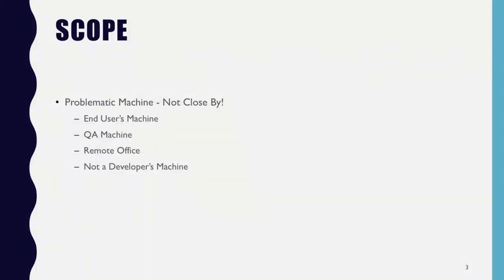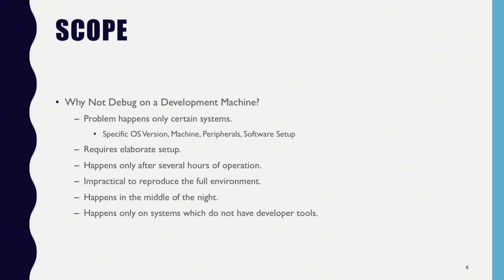So, scope. The scope we are talking about is when the problematic machine is not nearby. This may be an end user's machine, a QA machine, or a machine in a remote office. Essentially, it's not a developer's machine. The question is: why not debug the problem on a development machine?